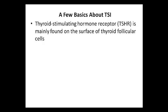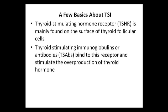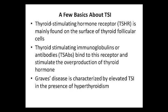Let's discuss a few basics about thyroid-stimulating immunoglobulins. The thyroid-stimulating hormone receptor is mainly found on the surface of thyroid cells. Thyroid-stimulating immunoglobulins bind to this receptor and stimulate the overproduction of thyroid hormone. Graves' disease is characterized by elevated thyroid-stimulating immunoglobulins in the presence of hyperthyroidism.